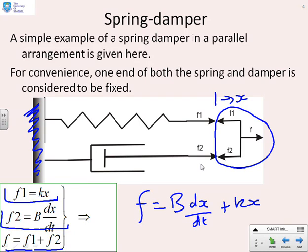So I get a simple first order differential equation. So a spring damper, where they have both got one end fixed and the other end is at the same point, gives you a first order differential equation.